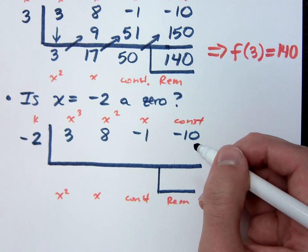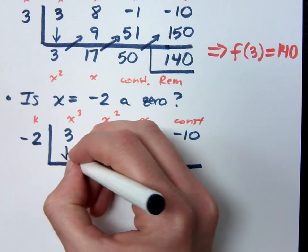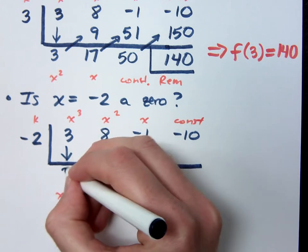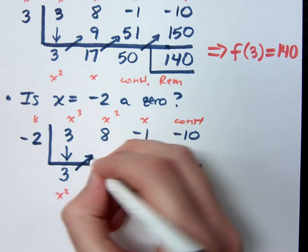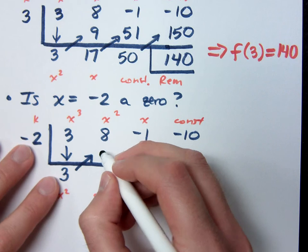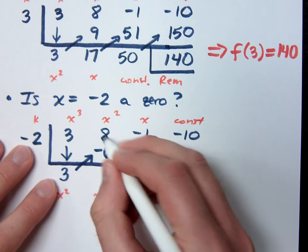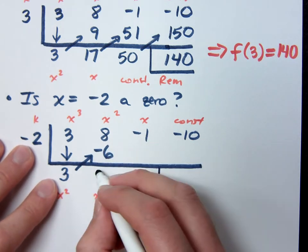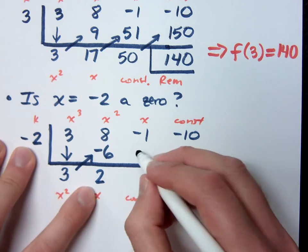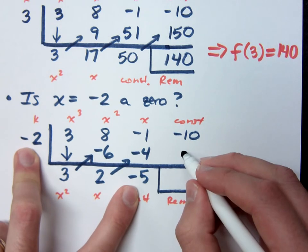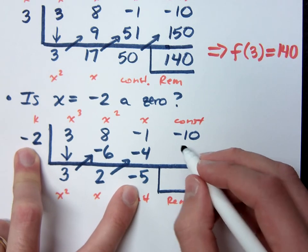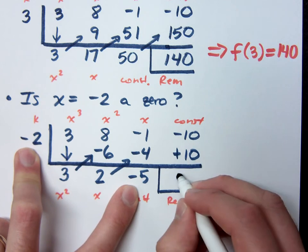Are you telling me you've already done the synthetic division? Yeah. It was that fast? Wow. Would it have been that fast if you'd done long division? Probably not. So bring down the 3. Multiply. -6. What do we do with the 8 and the -6? 2. Multiply. -4. -5. That's plus 10. You get a remainder of 0.